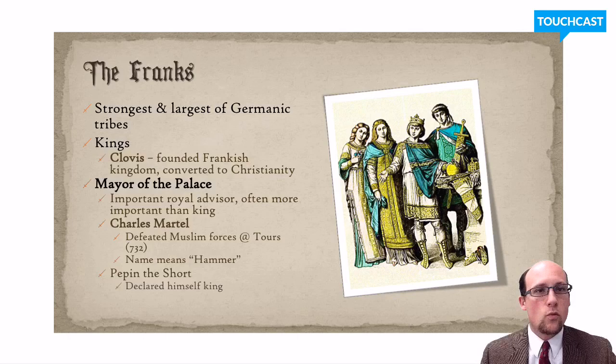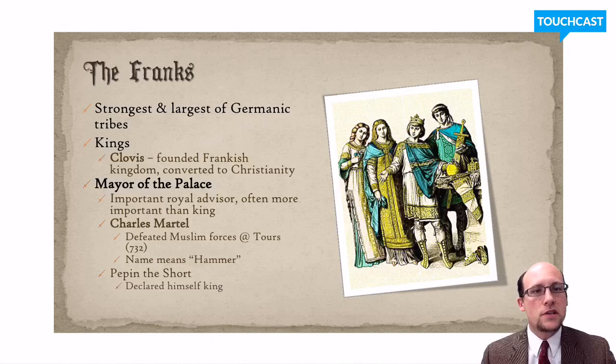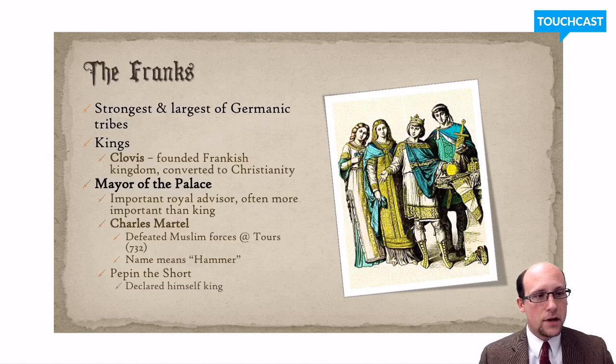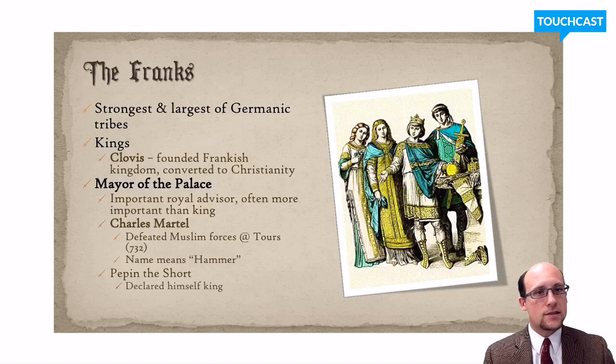Into all these changes, one tribe is going to take power: the Franks. The Franks start to eclipse the other Germanic tribes by the 8th century, unified under a leader named Clovis. Two things to remember about Clovis: first, he founded the Frankish kingdom, unifying all the Frankish tribes into one. Second, he converted to Christianity, making him a powerful ally of the Bishop of Rome — the Pope. Since Rome had become a Christian empire under Constantine, converting to Christianity gave Clovis and the Franks important allies.